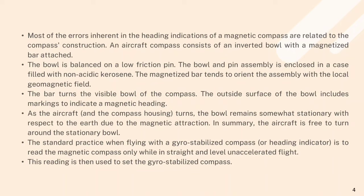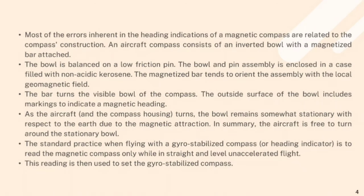An aircraft compass consists of an inverted bowl with a magnetized bar attached. The bowl is balanced on a low-friction pin. The bowl and pin assembly is enclosed in a case filled with non-acidic kerosene. The magnetized bar tends to orient the assembly with the local geomagnetic field. The bar turns the visible bowl of the compass. The outside surface of the bowl includes markings to indicate the magnetic heading. As the aircraft and the compass housing turns, the bowl remains somewhat stationary with respect to Earth due to the magnetic attraction.